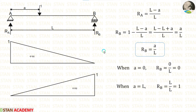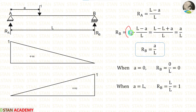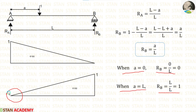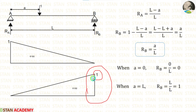Now let us calculate R_B. We can calculate R_B using the total load. In this beam, we are having only one load — that is the unit load 1. So the total load 1 minus R_A gives us R_B, which is equal to A by L. When A is equal to 0, R_B will be 0. When A is equal to L, R_B will be 1. So we plot R_B equal to 0 at A equals 0, and R_B equal to 1 at A equals L.